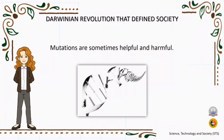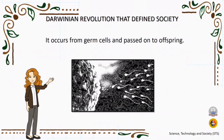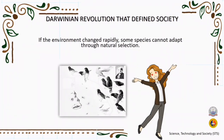Mutations can be very harmful, sometimes neutral, or sometimes helpful, resulting in a new advantageous trait. When mutations occur in germ cells, they can be passed on to offspring. If the environment changes rapidly, then some species may not be able to adapt fast enough through natural selection. Through studying the fossil record, we know that many of the organisms that once lived on Earth are now gone, meaning they are now extinct.